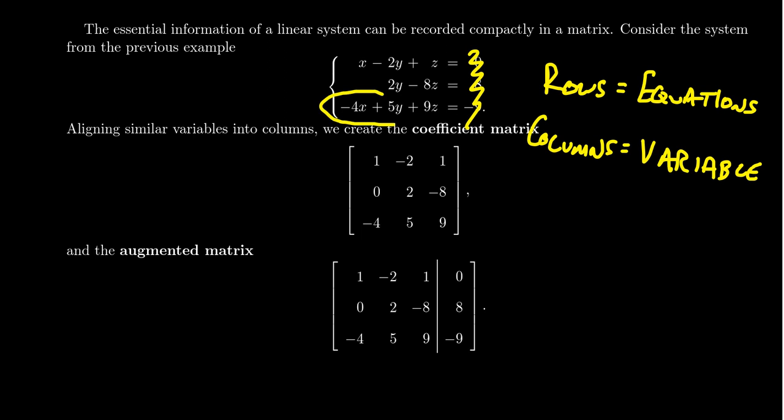The third row here, we record the variable coefficients, a -4 for x, a 5 for y, a 9 for z. So each of these rows in the matrix coincides with an equation: 1, -2, 1. This one here, we get 0, 2, -8. And then here we get -4, 5, and 9.